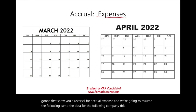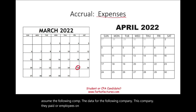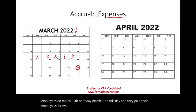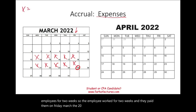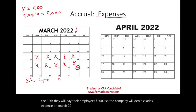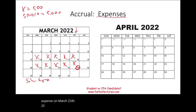This company paid their employees every Friday. Last time they paid their employees was Friday, March 25th, and they paid them for two weeks of work. Every day equals $500, so on March 25th they paid their employees $5,000. The company debited salaries expense $5,000 and credited cash $5,000.